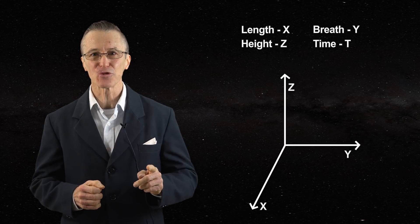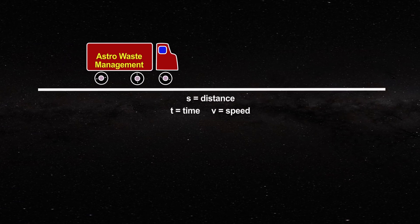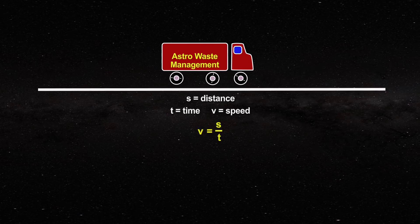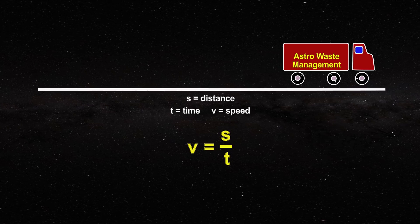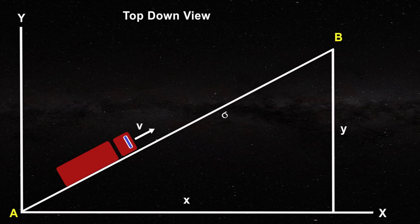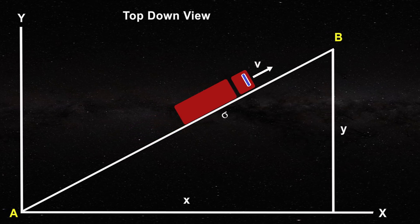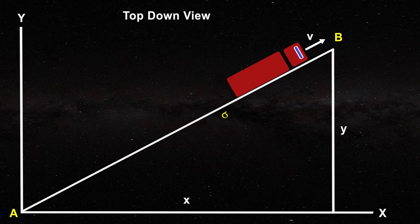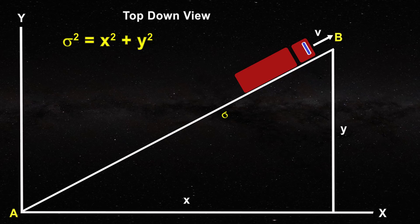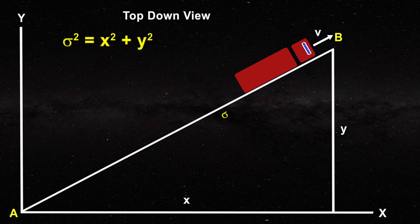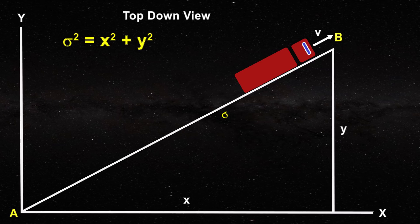A distance or length can only be obtained from time by multiplying time by speed. If a truck travels a distance s in a time t at a constant speed v, then the speed is the distance divided by the time, as shown by this equation. Speed is not a new dimensional coordinate and is not perpendicular to the x, y and z axes. Now consider a truck travelling at some constant speed v on flat ground from point A directly to point B in a time t, as in this figure. The distance the truck travels, sigma, is the hypotenuse of a right triangle. This equation, the Pythagorean theorem, is a distance formula which we can use to solve for sigma. The hypotenuse is not perpendicular to x and y, and it is not a new dimensional coordinate. Since sigma is the speed of the truck multiplied by the time of travel, the squared length of the hypotenuse is given by this equation.